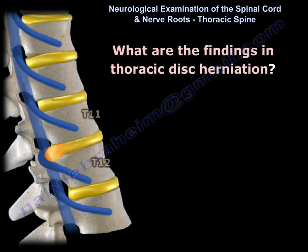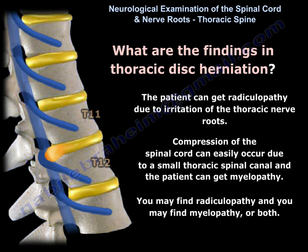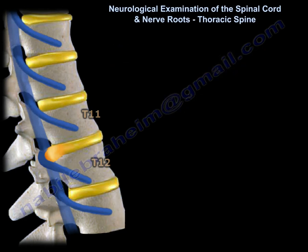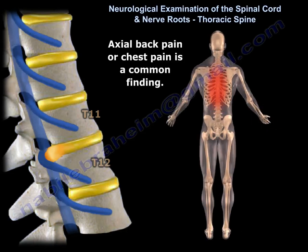What are the findings in thoracic disc herniation? The patient can get radiculopathy due to irritation of the thoracic nerve roots. Compression of the spinal cord can easily occur due to the small thoracic spinal canal, and the patient can get myelopathy. So you may find radiculopathy, myelopathy, or both.